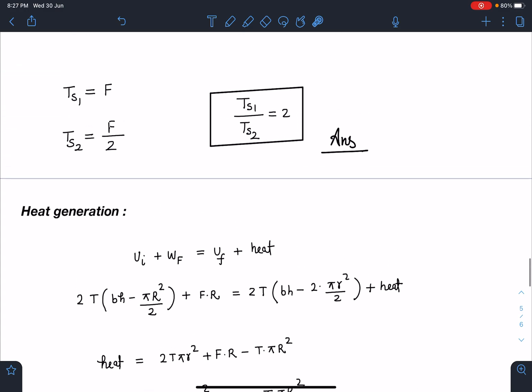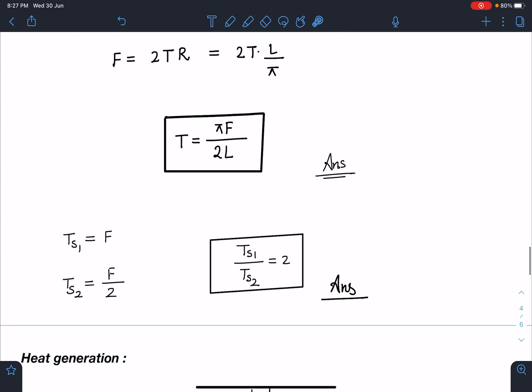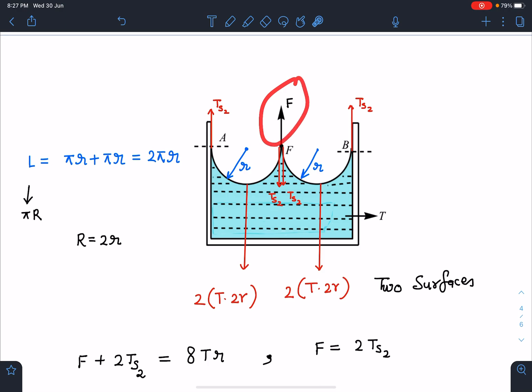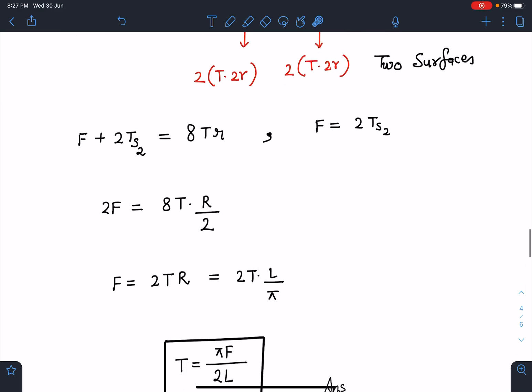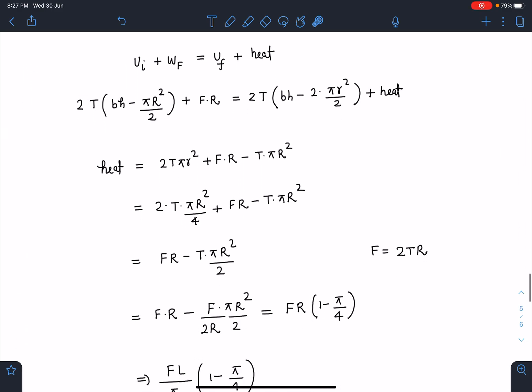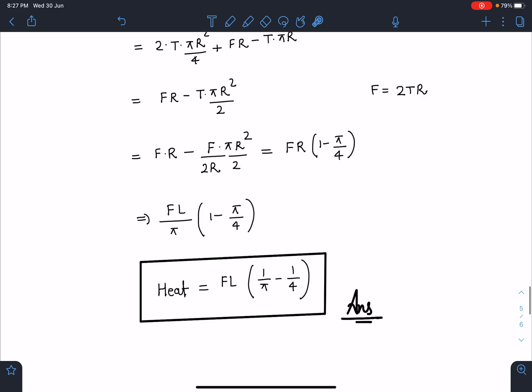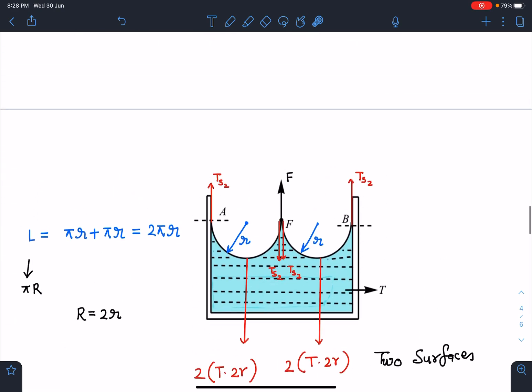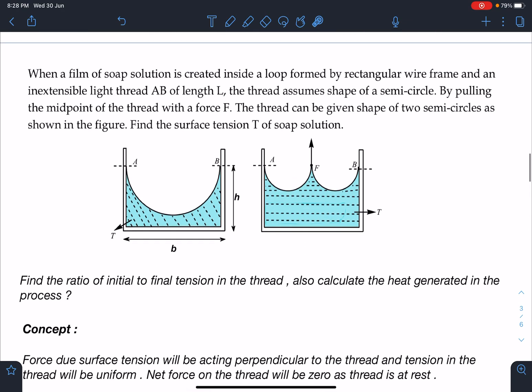See normally the mistake students do is they will forget the work done by this external agent this force F because in surface tension problems we are so habitual to write heat generated is equal to change in surface area. I give this problem to some of my students and many of them did the same mistake. So it is most likely such kind of mistake you can also make. So this is it guys if you have enjoyed this problem please leave a like share this video with others and if you haven't subscribed my channel yet please subscribe it. I'll be coming up very soon with another amazing problem. Thank you, thanks for watching it.